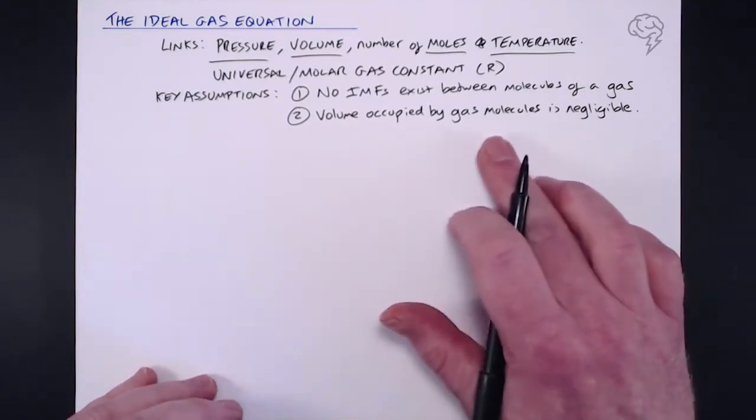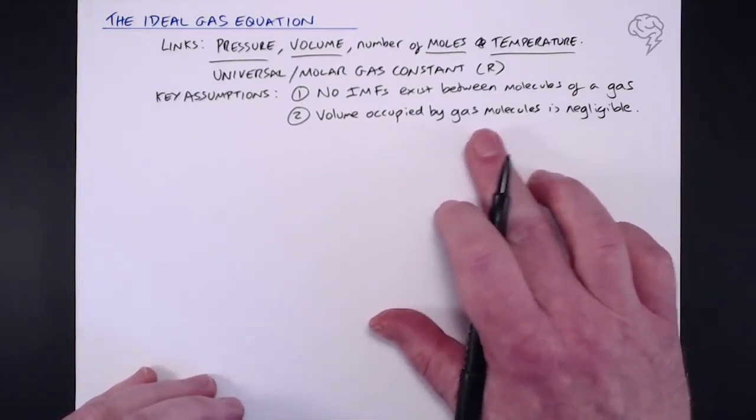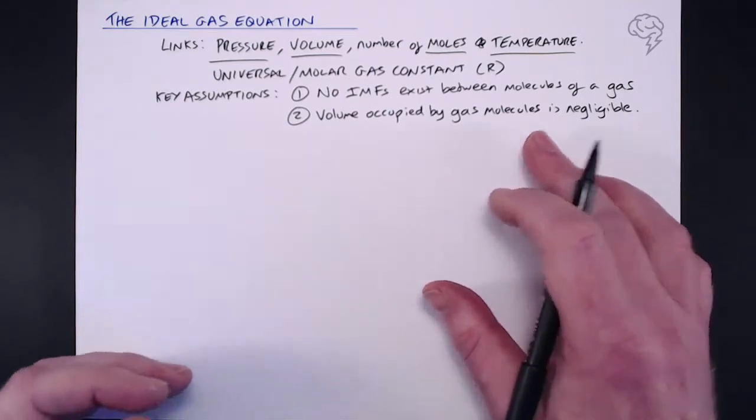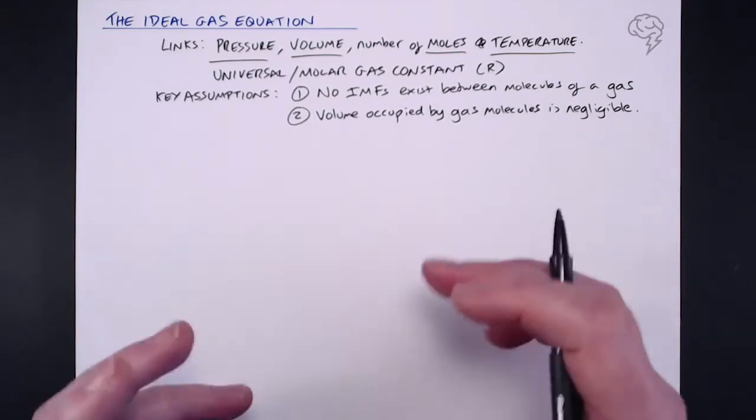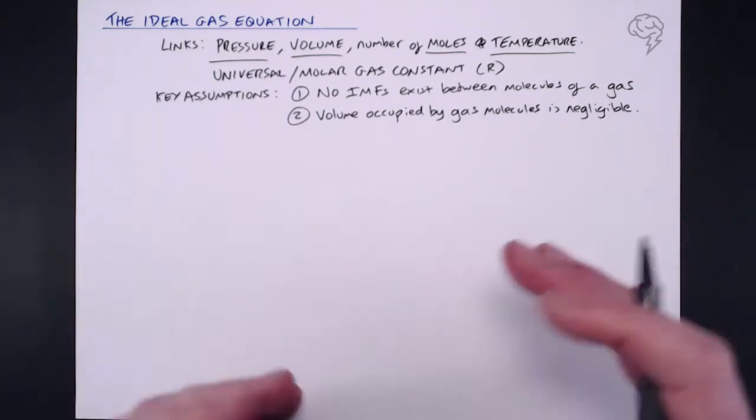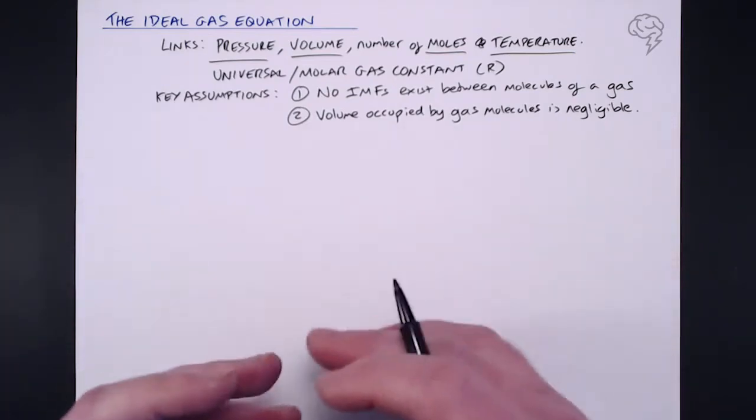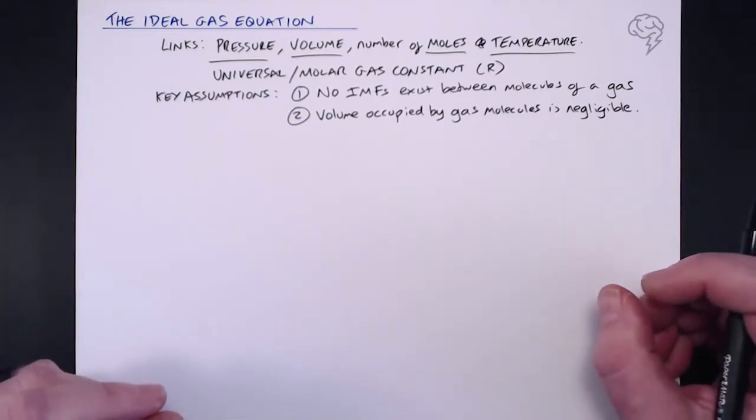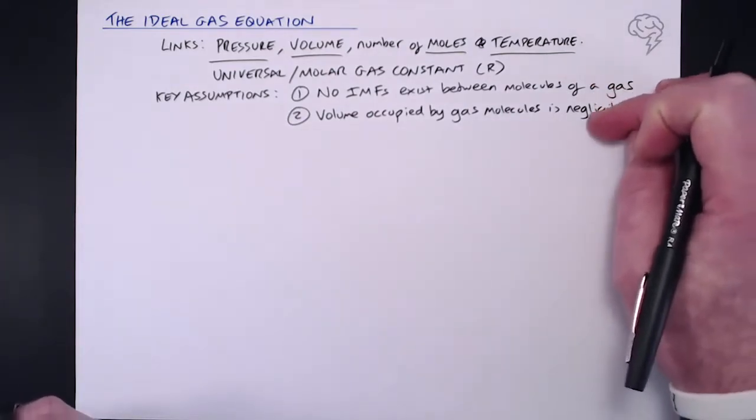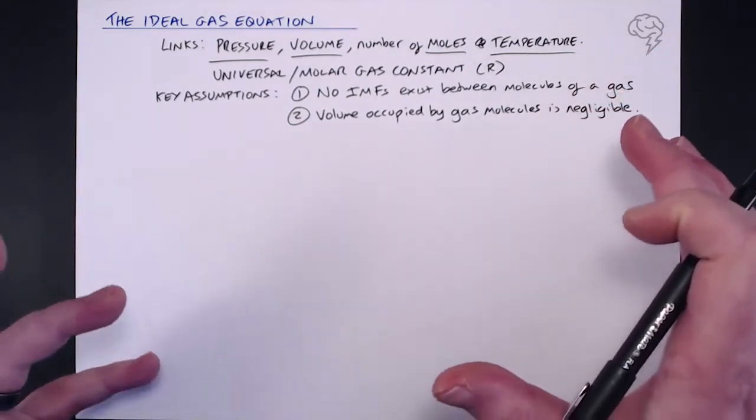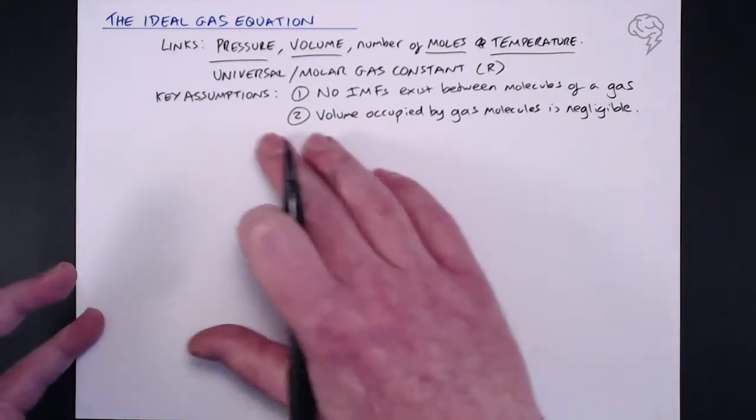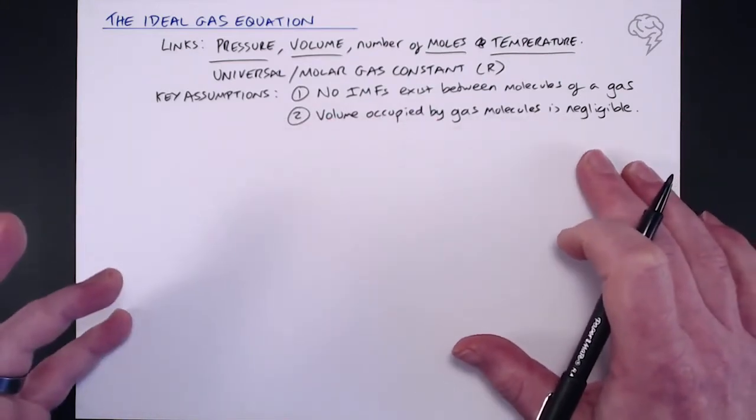Secondly, that the volume occupied by the molecules themselves, the gas molecules themselves, is negligible, i.e. that these molecules are so small that they don't take up any volume themselves. Well, that's of course rubbish as well, because they exist, they're matter, they must take up some sort of volume. But the thing is, the effect they have on this equation is so small, we can basically ignore them.